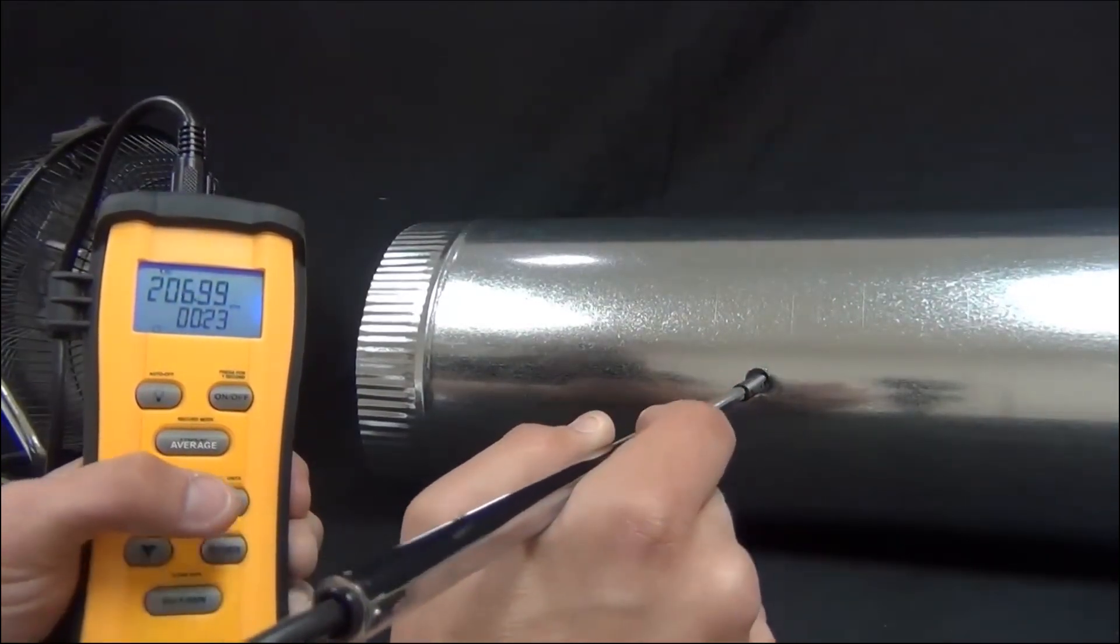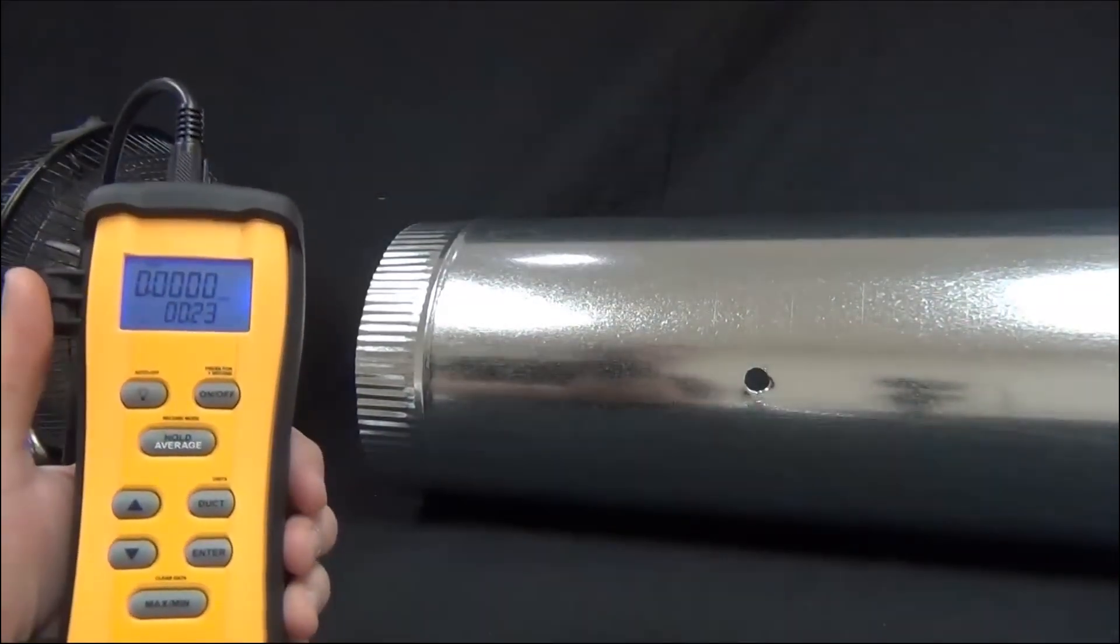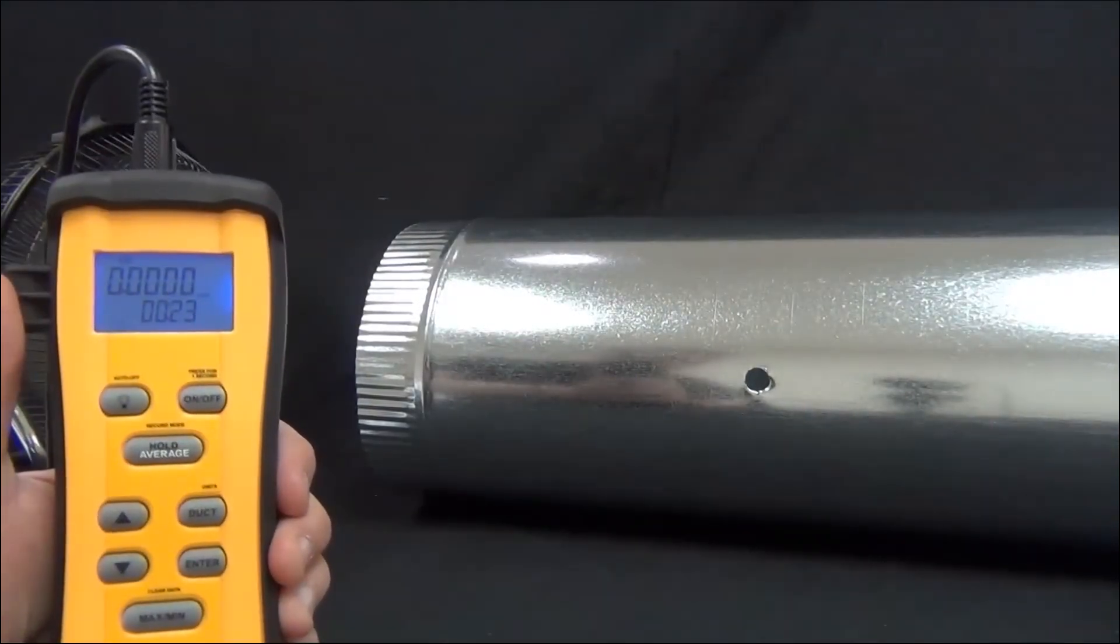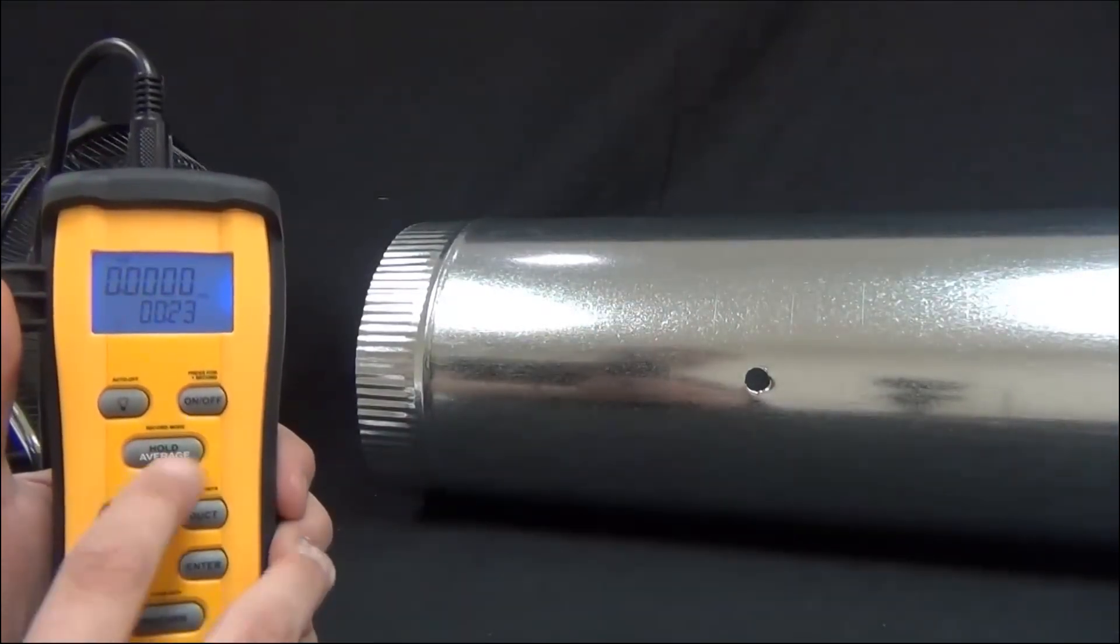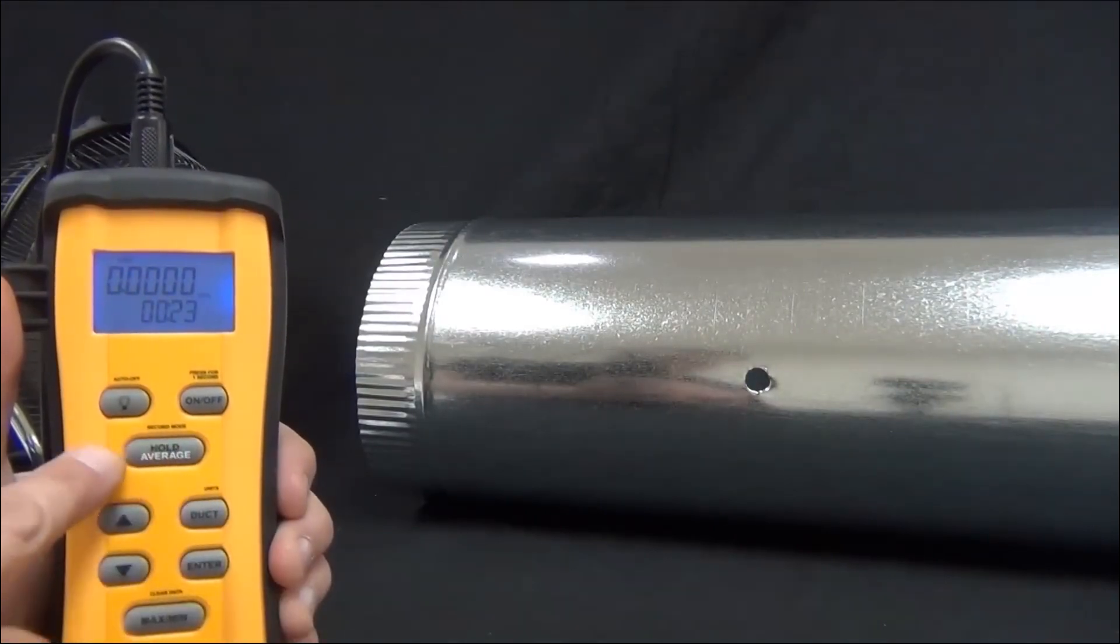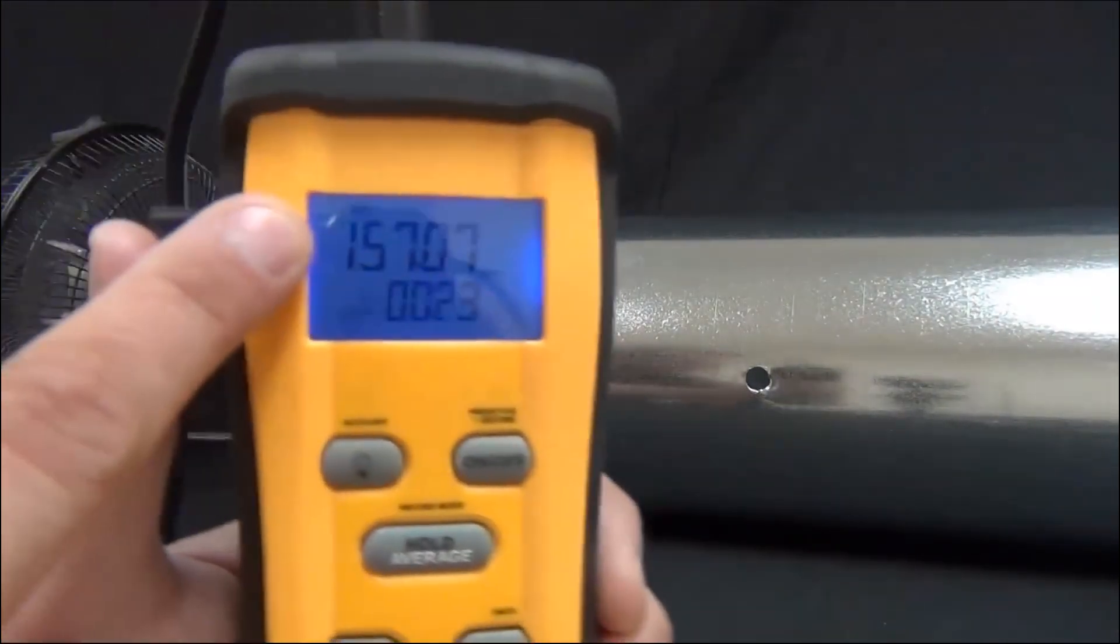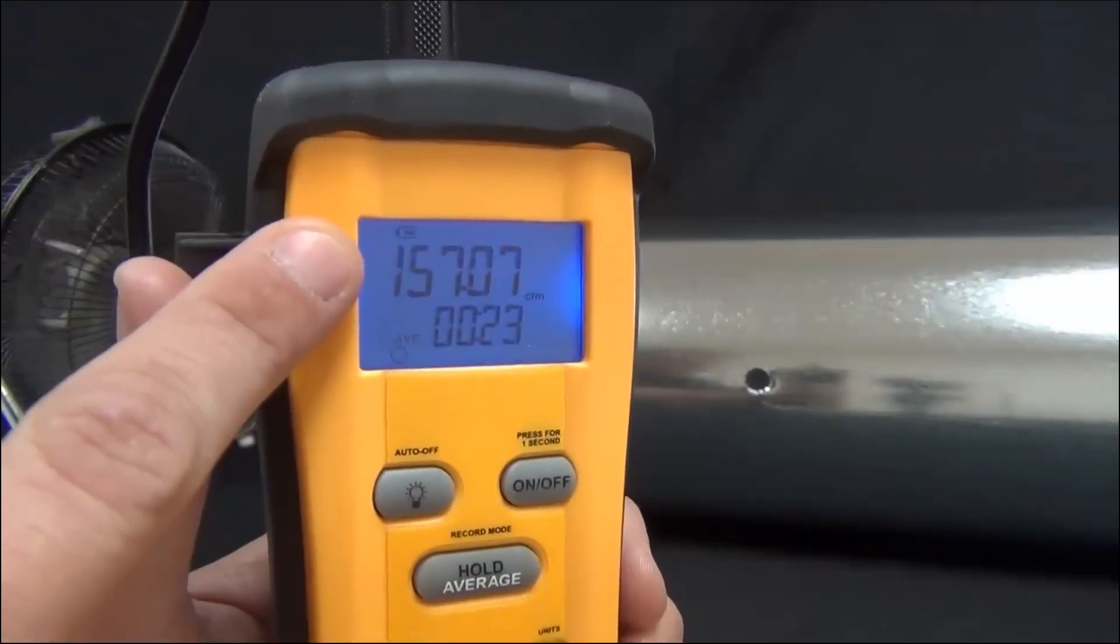So yeah, you'll see that we're reading zero CFM because we're not in the duct anymore. But to get the average, I'm just going to press average once, and it'll give me an average CFM of 157 across that duct. And we did it over a 23 second time span.